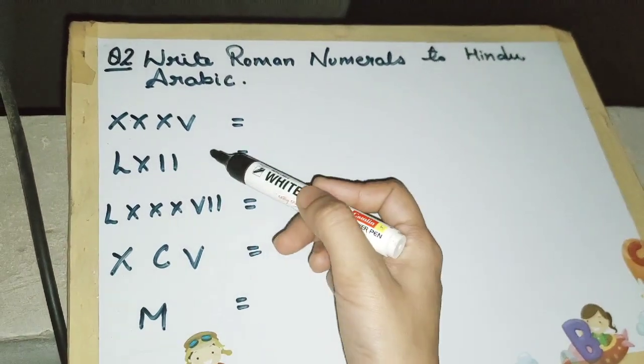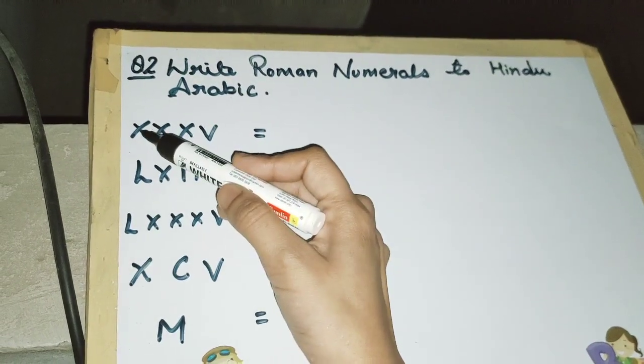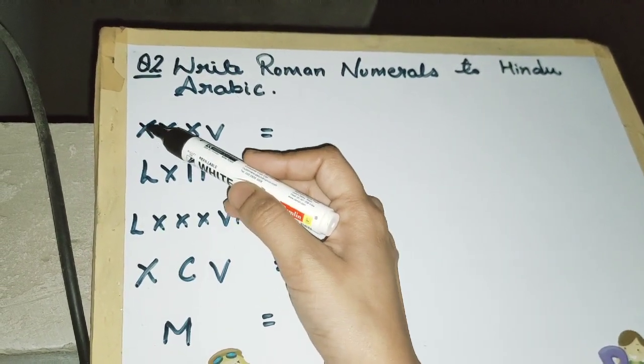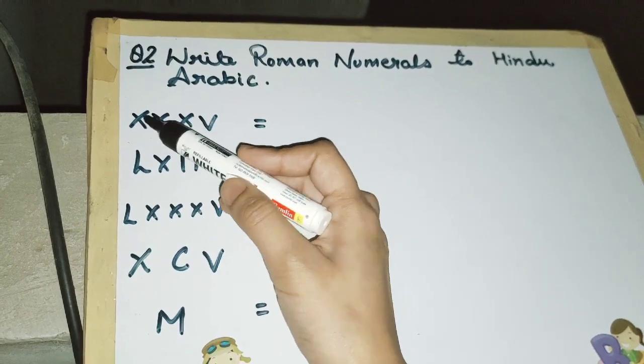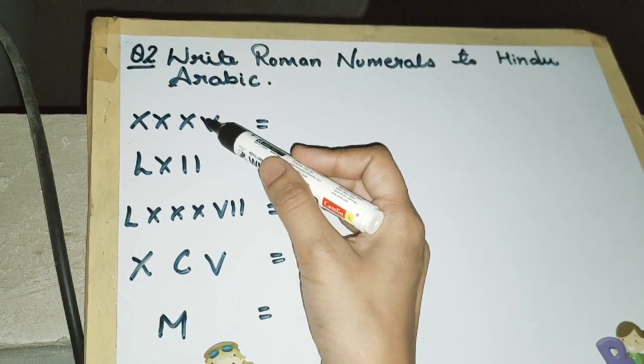is change these Roman numerals to Hindu-Arabic. This is XXXV: X means 10 three times, so 30, and V is 5, so we write 35. Or you can do 10 + 10 + 10 + 5